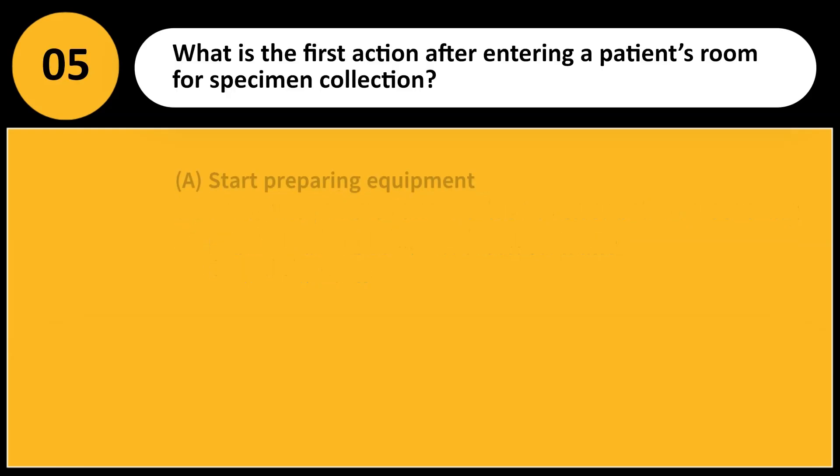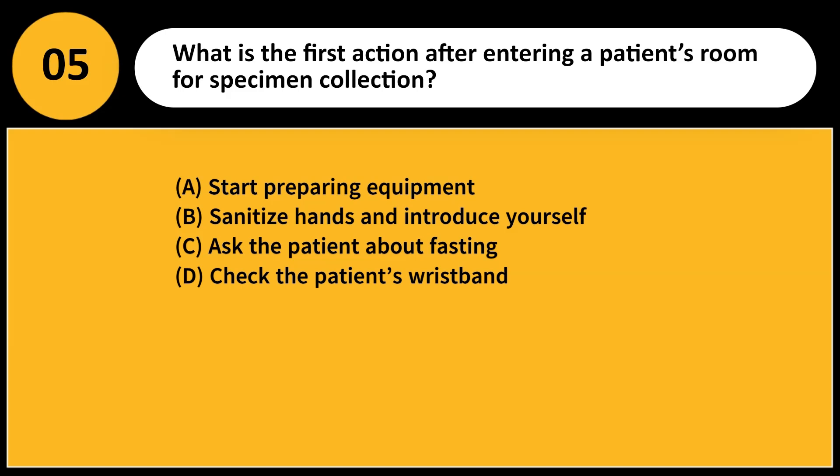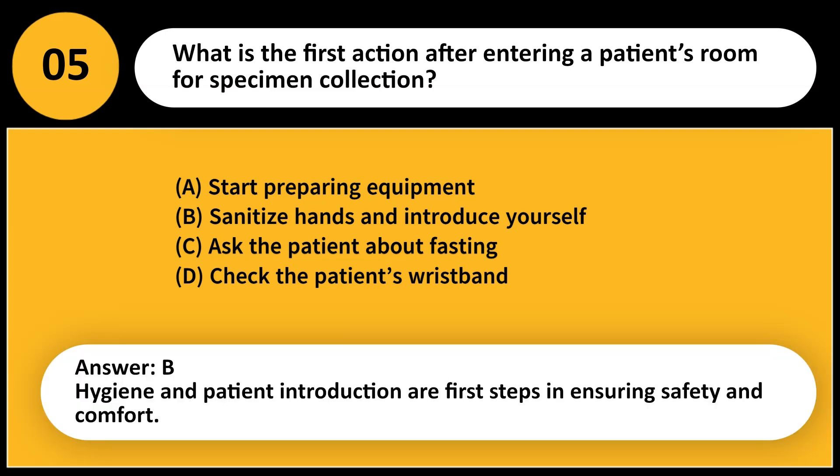What is the first action after entering a patient's room for specimen collection? A. Start preparing equipment. B. Sanitize hands and introduce yourself. C. Ask the patient about fasting. D. Check the patient's wristband. Answer: B and D. Hygiene and patient introduction are first steps in ensuring safety and comfort.